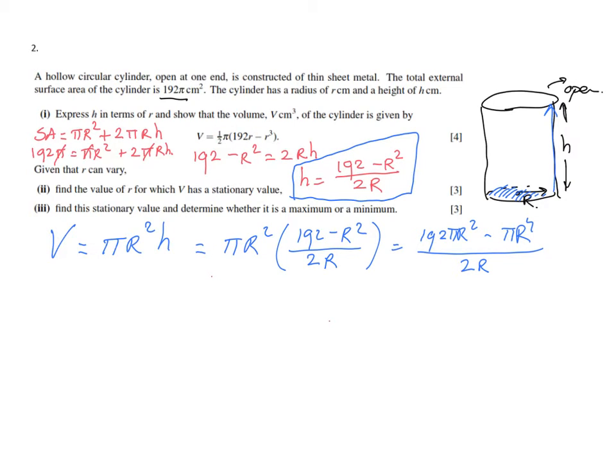I'm going to take the half out so the 2 will leave the denominator, and take the π out of the numerator. Before I do that, I see there's a common factor r, so let's take the r out - that becomes a 3 and that becomes a 1. Then I'm going to take the half out and the π. Inside those brackets you'll have 192r - r³, and that is what you were going to get.